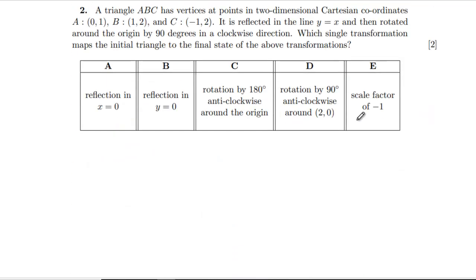Question two: triangle ABC has vertices at (0,1), (1,2), (-1,2), reflected in the line y equals x, rotated 90 degrees clockwise about the origin. Which single transformation? I'm going to have to draw this to see what's going on. We've got a triangle like that. Reflecting in y equals x gives us this. Rotate clockwise gives us this, which is the same as reflecting in the x-axis, which is B.